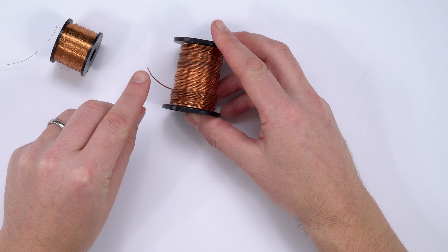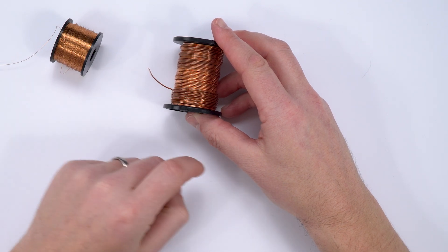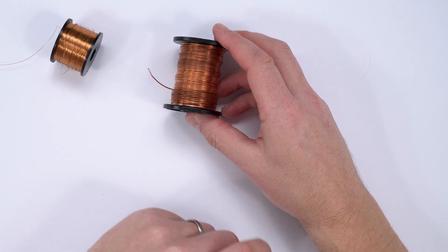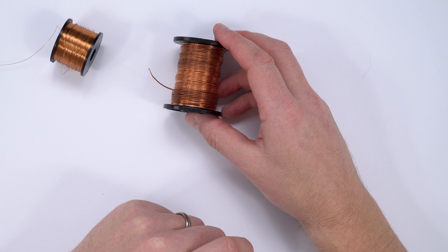Sometimes you need to know the cross-sectional area of a piece of wire, for example if you're going to investigate its Young's modulus or the resistivity of that material.